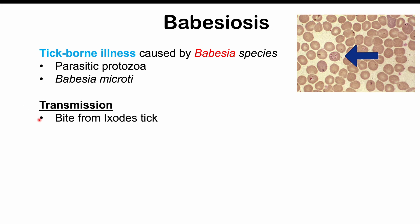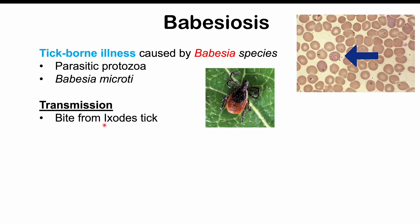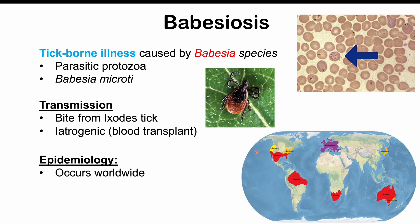Transmission comes from the bite of an Ixodes tick, also known as a deer tick or black-legged deer tick. It can also be transmitted through blood transfusion via iatrogenic causes, though this is more rare. Babesiosis can occur worldwide — in the northern Midwest and northeastern United States, along the southern US and northern Mexico, South America, Europe, Japan, South Africa, and Australia.